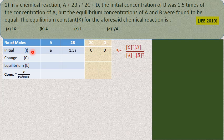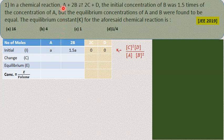Let the initial concentration of A be equal to small 'a'. Then B is 1.5a as given. Since the reaction hasn't started at time zero, C and D are both 0. The change C at equilibrium: if you know what change happens to the first reactant A, you can write it for B, C, and D.